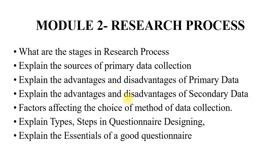Under Module 2, first learn about the research process and its stages. Then cover sources of primary and secondary data collection with their advantages and disadvantages, the factors affecting your choice of selecting data, how to create a questionnaire, its types and steps, and the essentials of a good questionnaire. These are the questions from the second module.